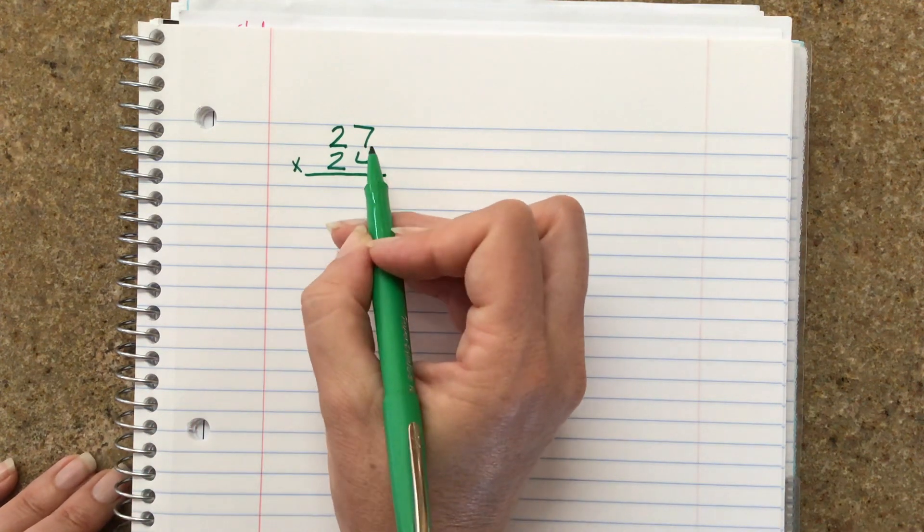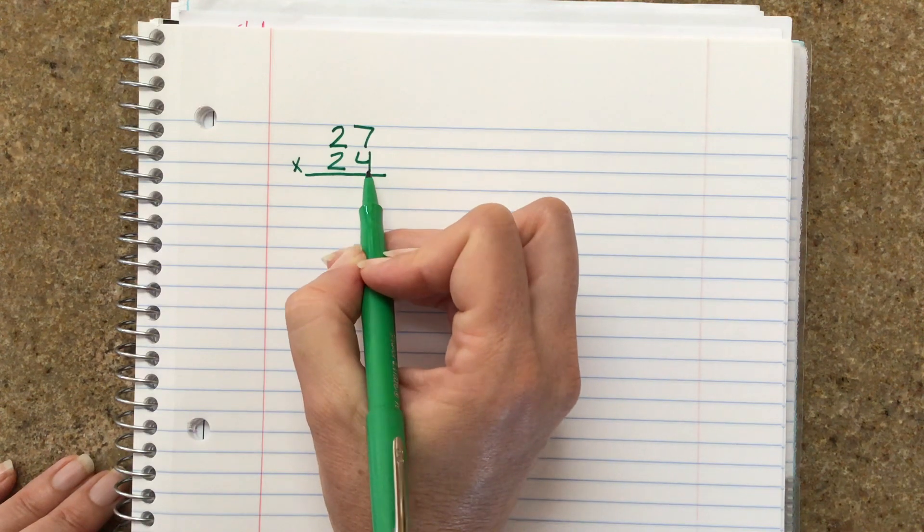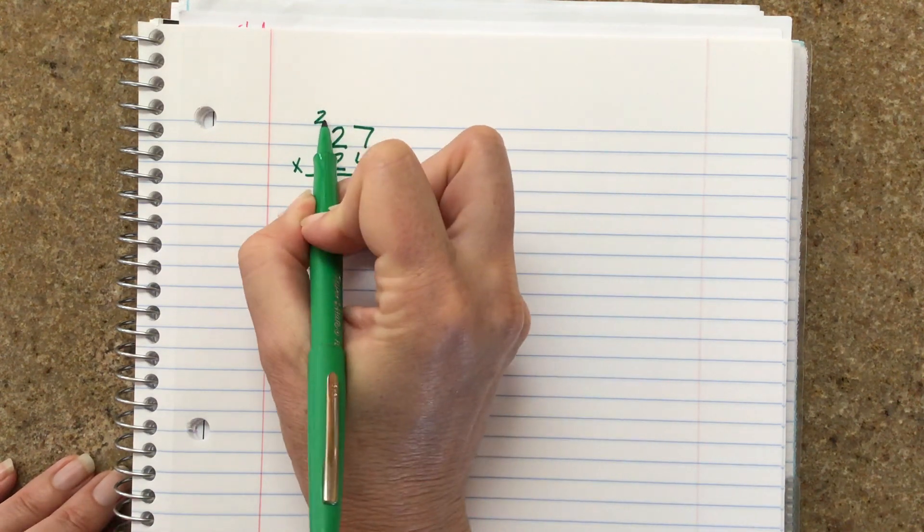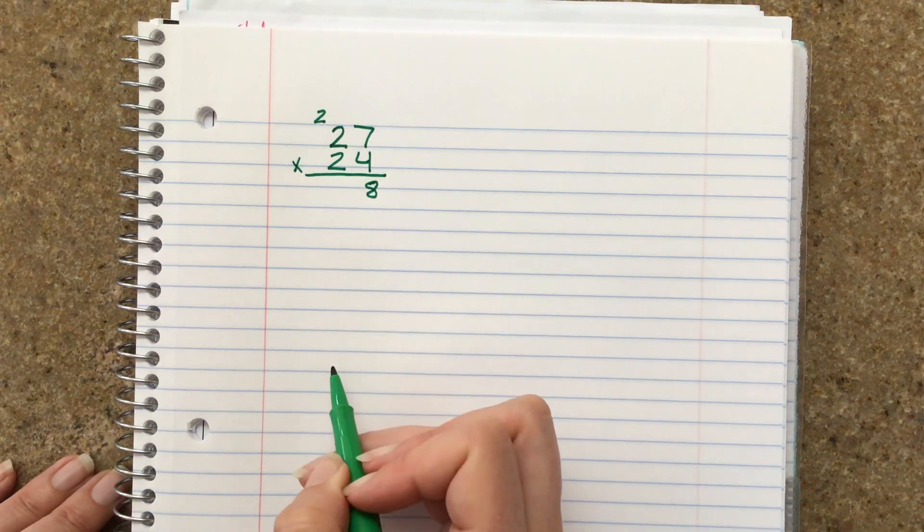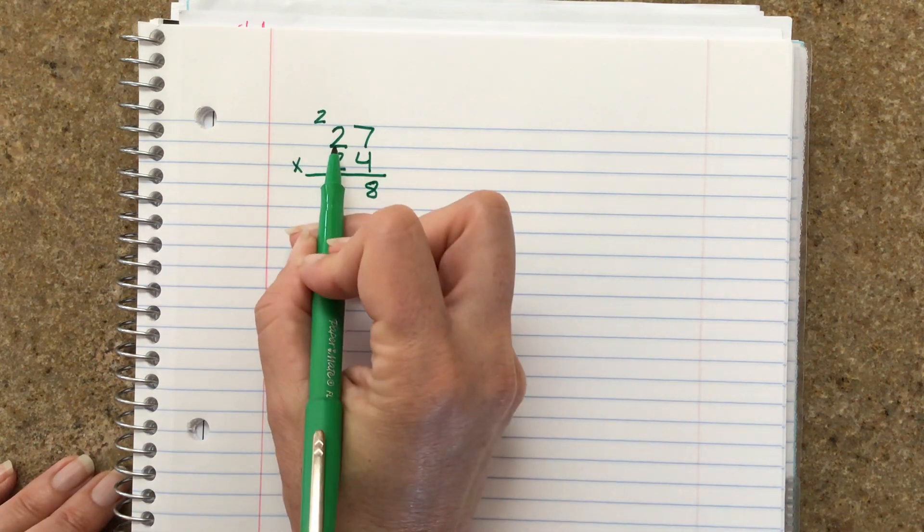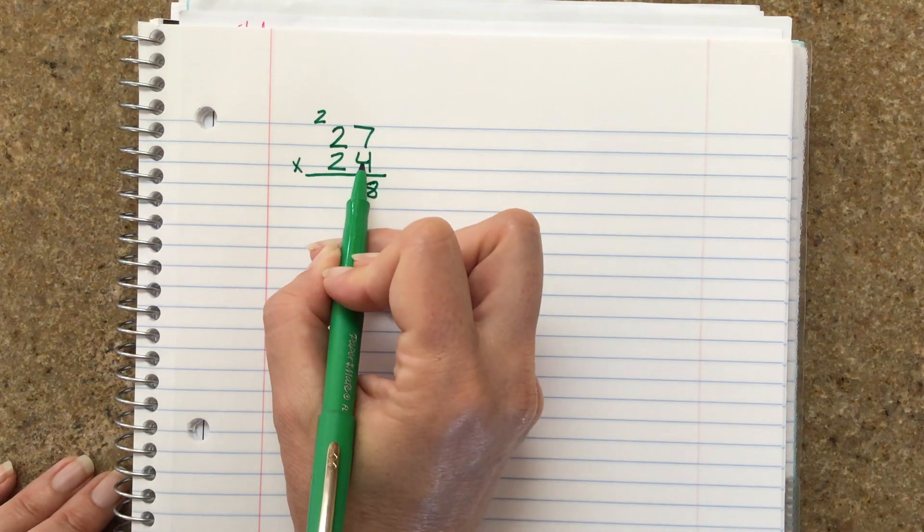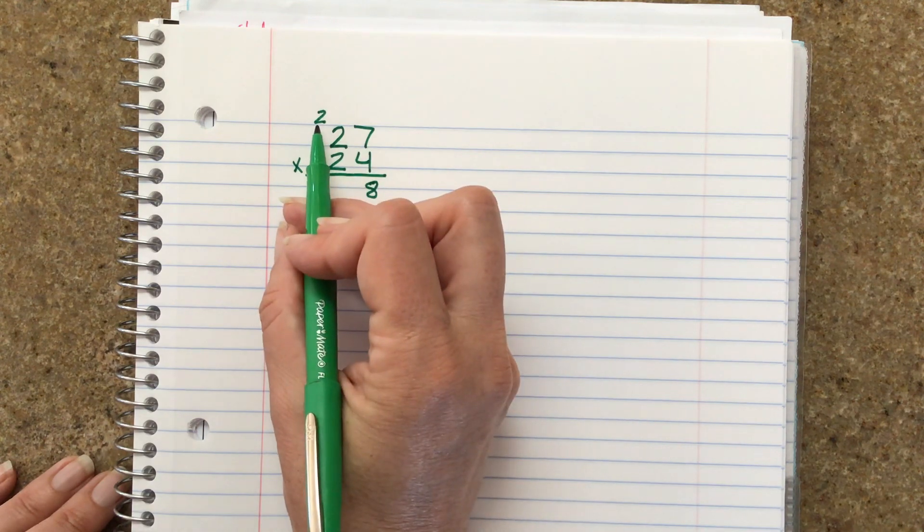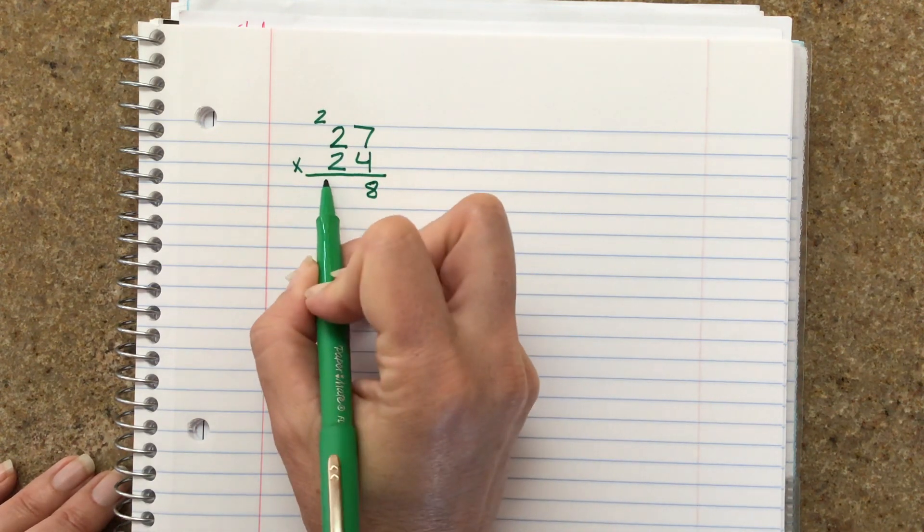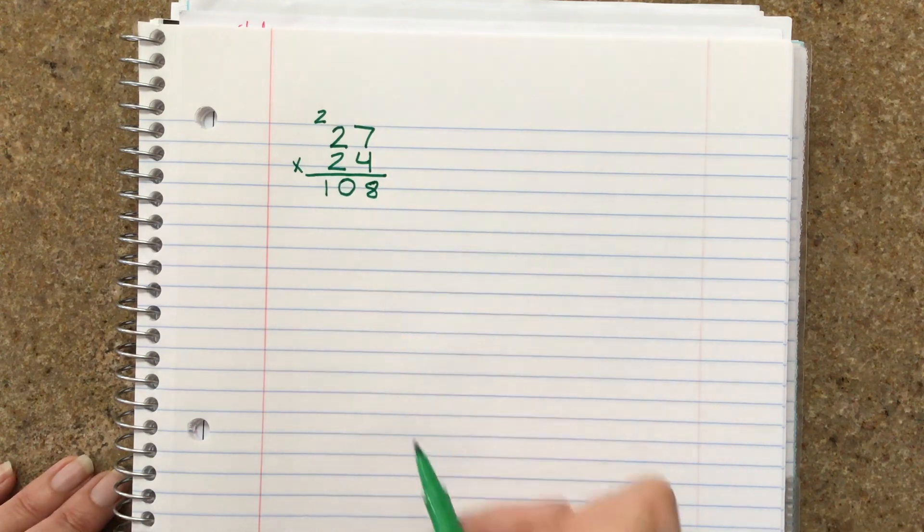Start with the ones. 7 times 4 is 28. So the 2 is going to go up here and the 8 is going to go down there. Then you say 2 times 4 is 8 plus 2 is 10. So the 10 is going to go over here. Now you have 108.